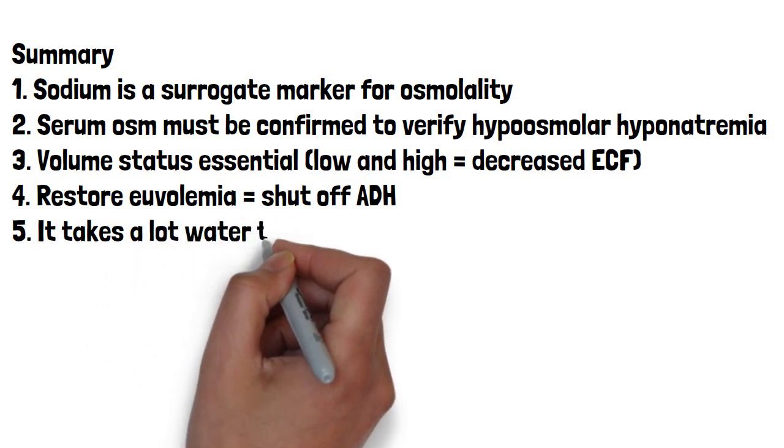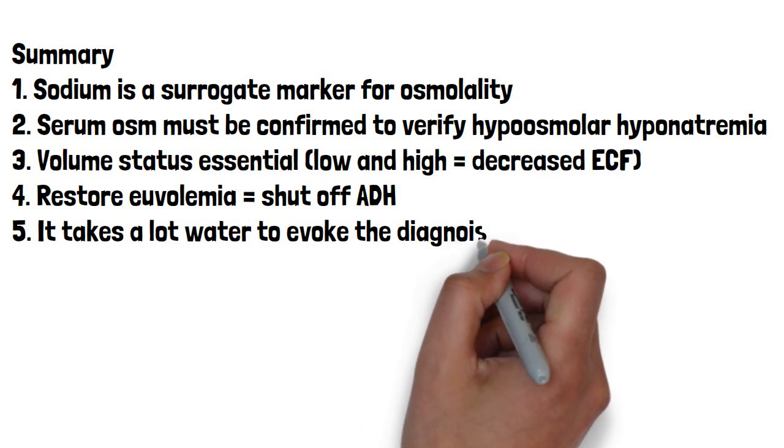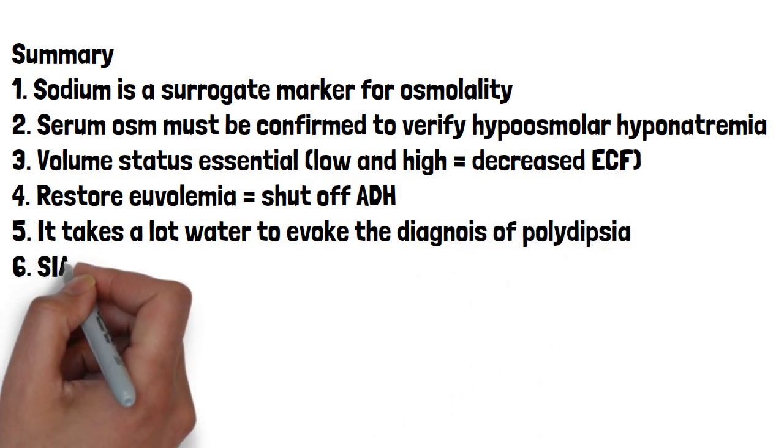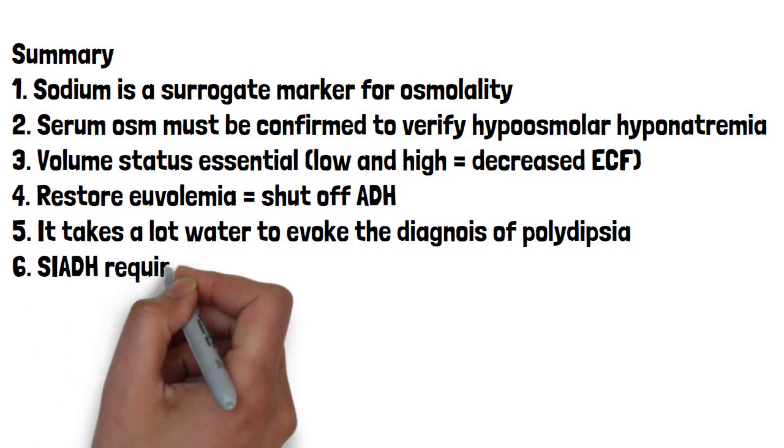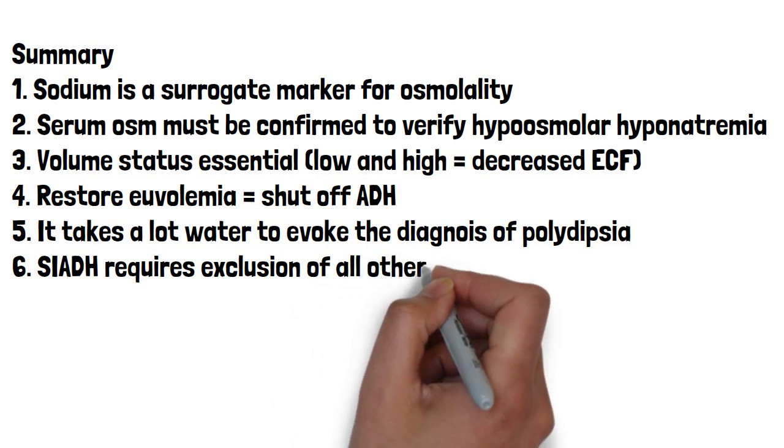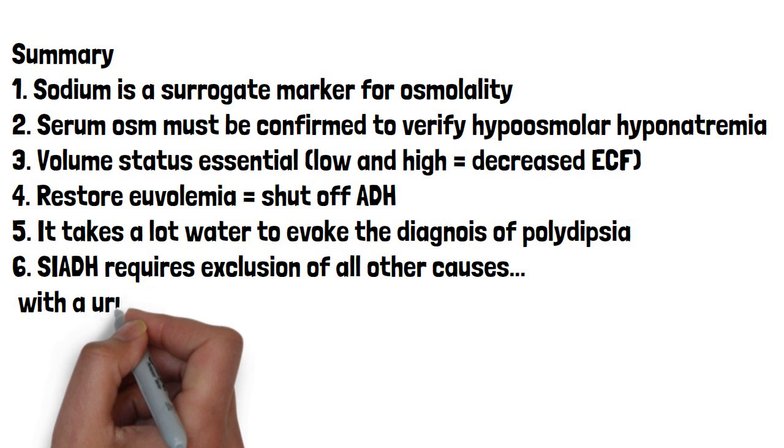We have to also remember it takes a lot of water to evoke that someone had psychogenic polydipsia. Their urine osm will always be less than 100 because it has to be maximally dilute. And always remember with SIADH, we exclude all the other causes and your urine osm should be anything above maximally dilute, which is telling us that ADH is on board.